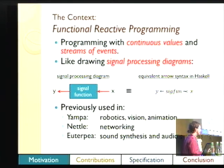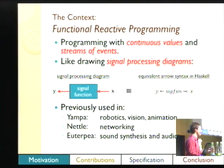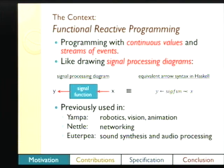This has been used before in Yampa for robotics, vision, and animation; Nettle for networking; Utopia for sound synthesis; and many other applications. These are just particularly arrowized FRP.